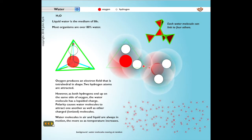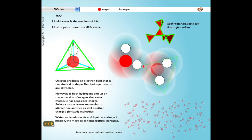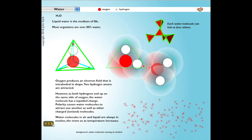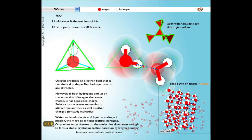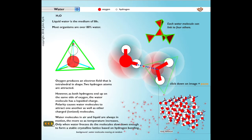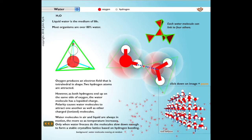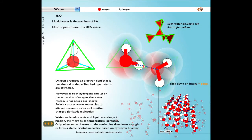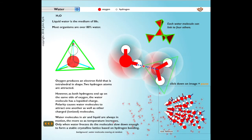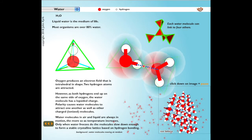Because of these attractions, water molecules in air and liquid are always in motion, the more so as temperature increases. Only when water freezes do the molecules slow down enough to form a stable crystalline lattice based on hydrogen bonding. The angles between the hydrogen atoms and the direction of the hydrogen bond between water molecules cause the lattice to take a hexagonal form in three dimensions, as we can see by rotating the lattice to look at the molecular organization from different angles.